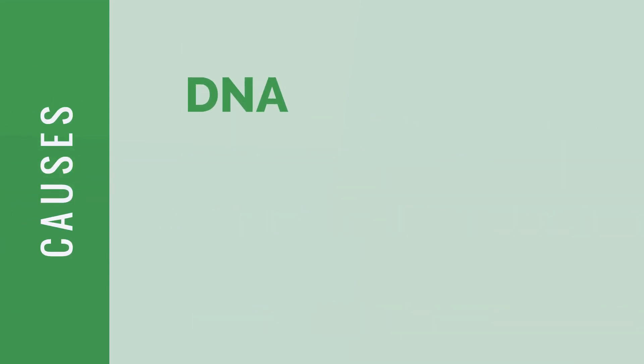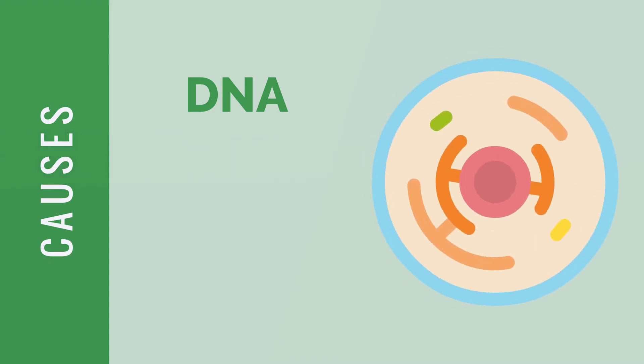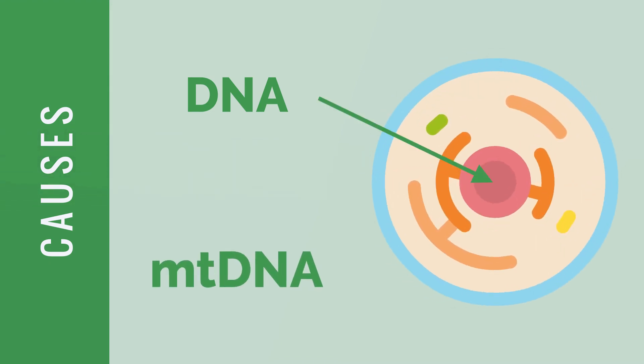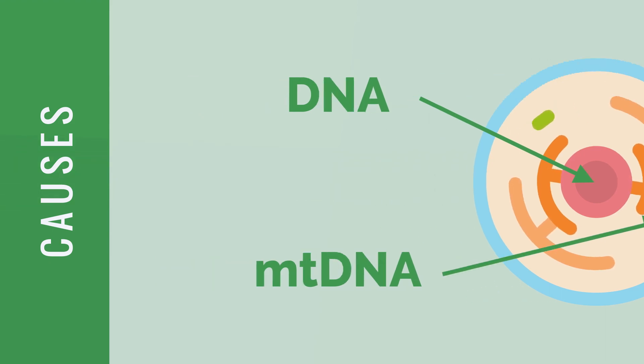Everyone has two types of DNA. Nuclear DNA, just referred to as DNA, is found in a cell's nucleus. Mitochondrial DNA, or MT-DNA, is found in the cell's mitochondria.